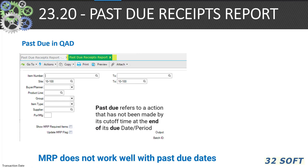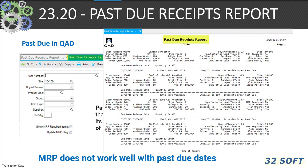Past due refers to an action that has not been completed by its cutoff time or at the end of its due date. Most people — customers and executives specifically — do not like past due. It upsets a lot of people. MRP does not work well with past dues. Don't let past dues exist in your ERP system.